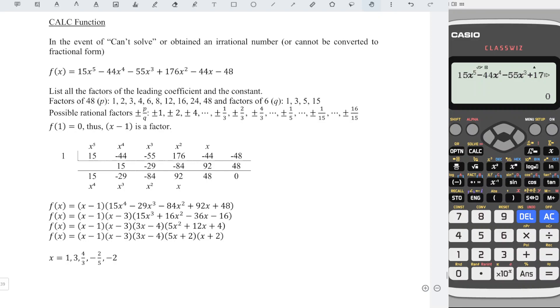If x equal to 1 is a root, which means that x minus 1 is a factor. Apply long division or synthetic division. We should be able to reduce the degree 5 polynomial to a degree 4 polynomial. After we already obtain a degree 4 polynomial, the rest of the solution will be much simpler to obtain their roots.